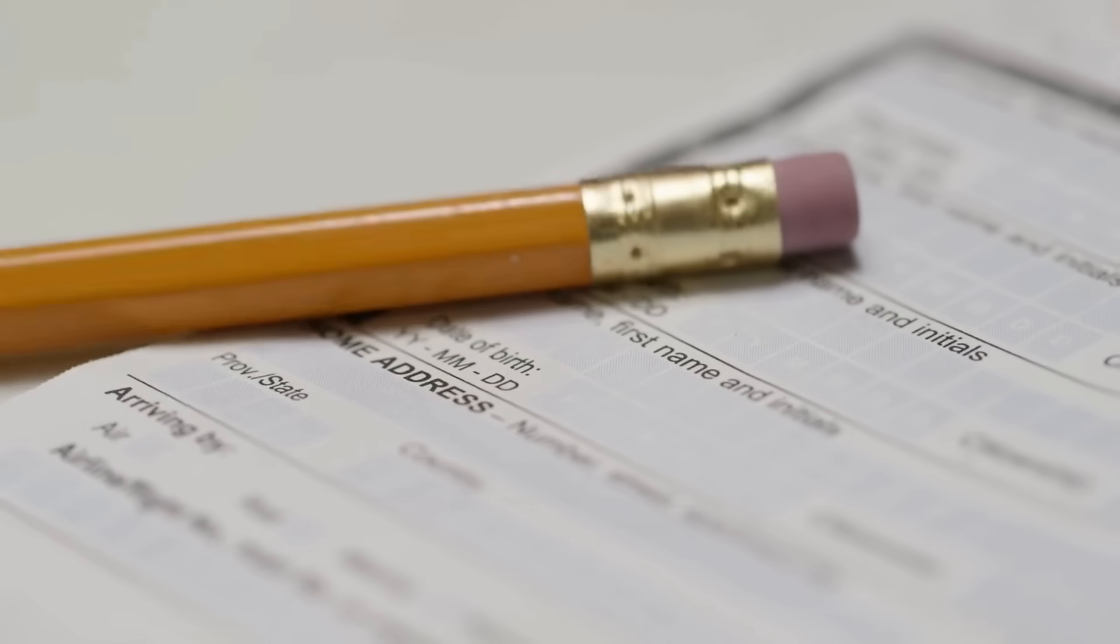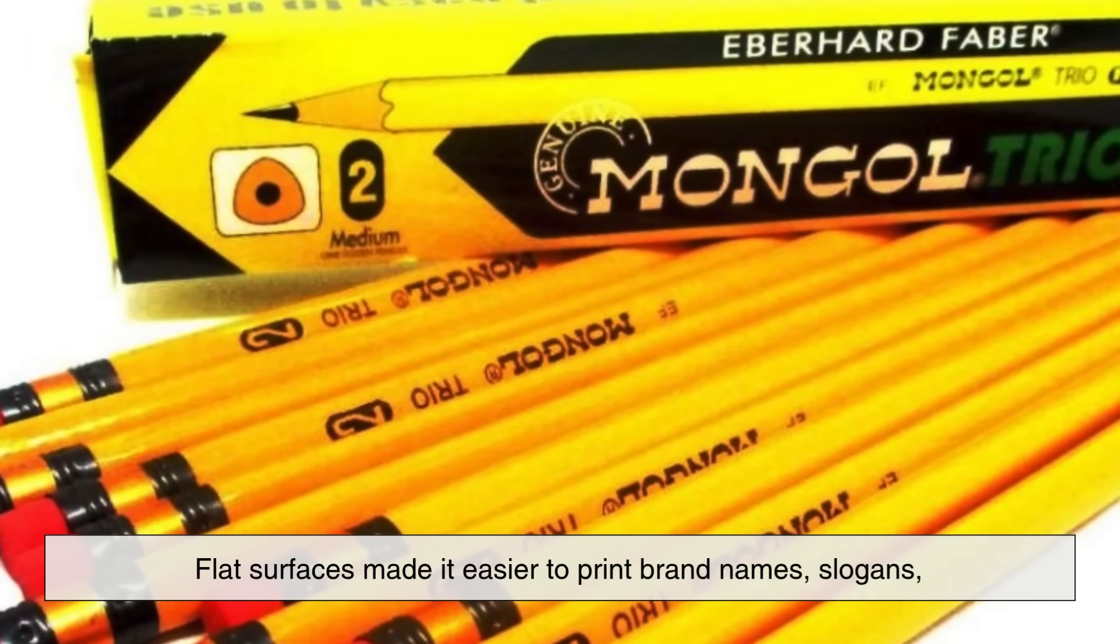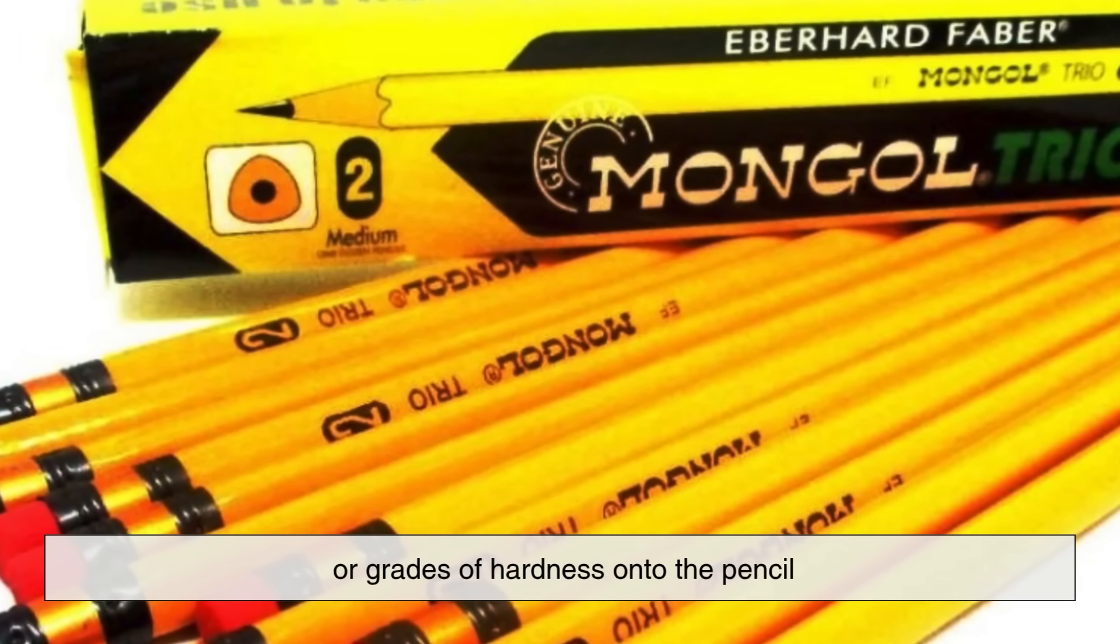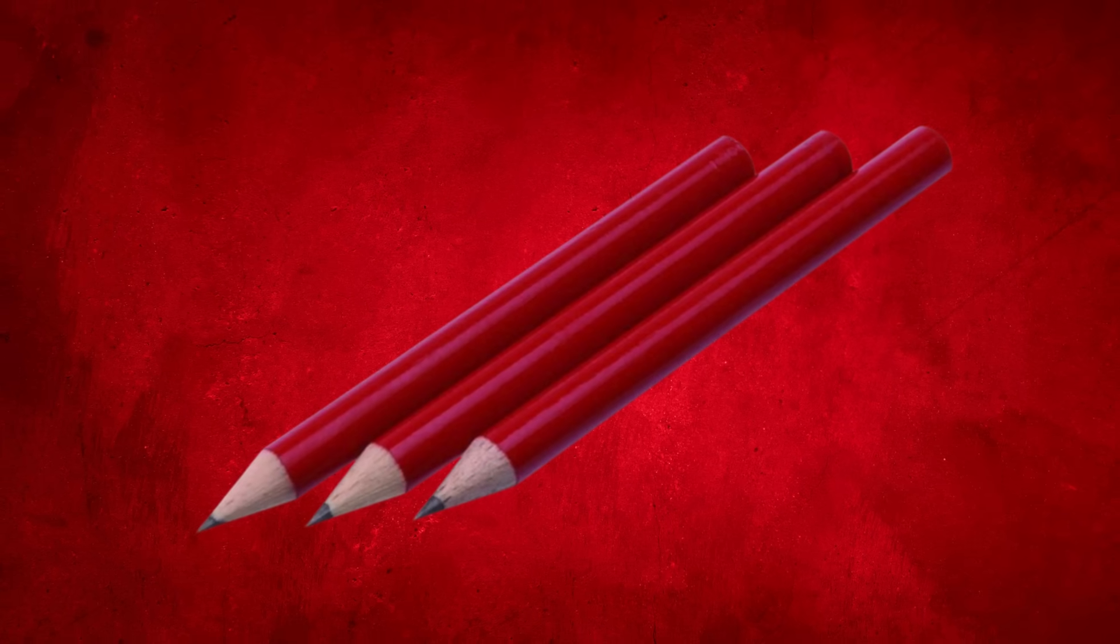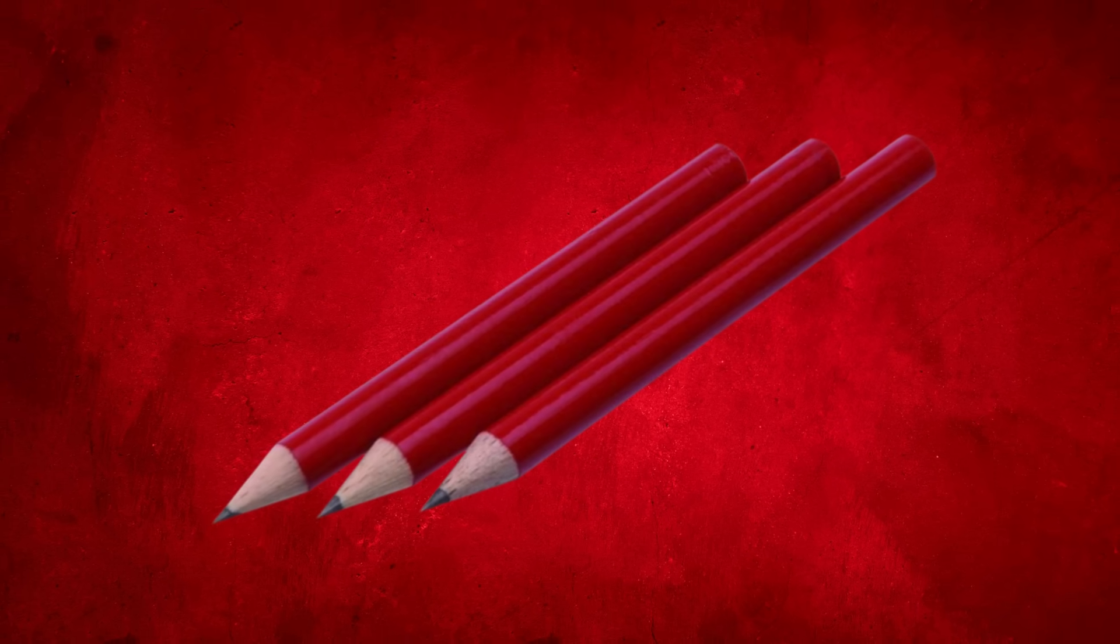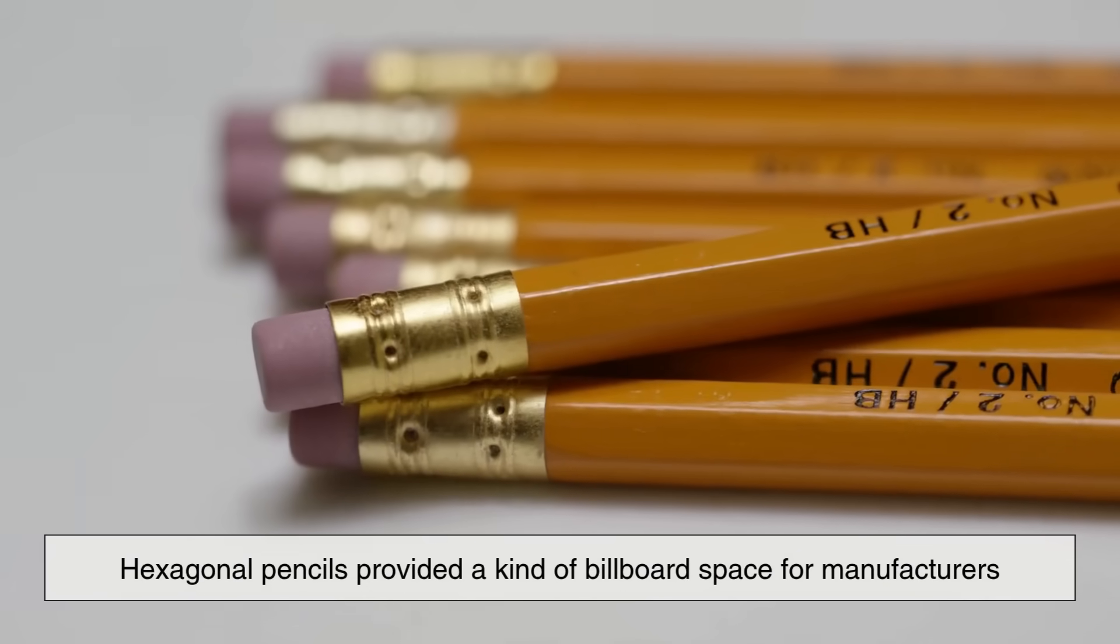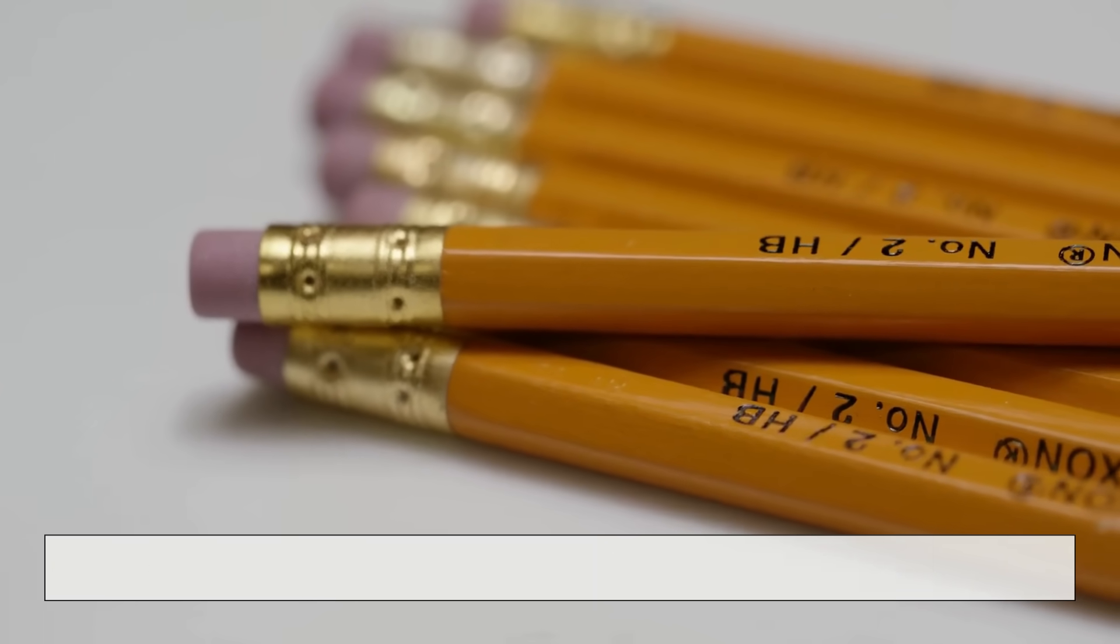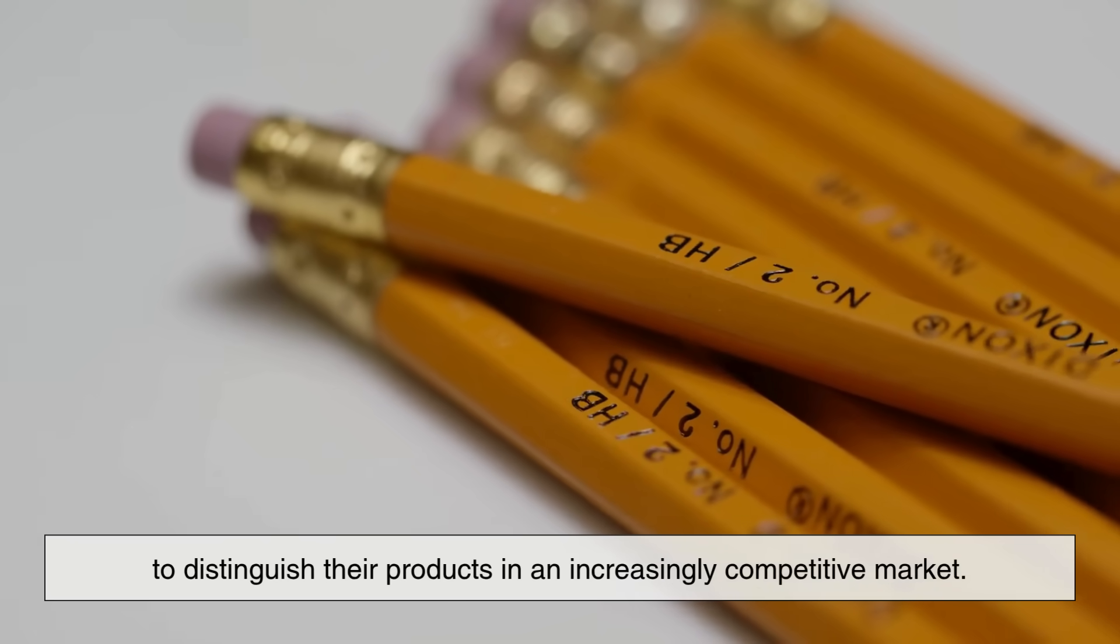Interestingly, the shape also helped with branding. Flat surfaces made it easier to print brand names, slogans, or grades of hardness onto the pencil. Round pencils had to rely on labels or paint, which could wear off more easily. Hexagonal pencils provided a kind of billboard space for manufacturers to distinguish their products in an increasingly competitive market.